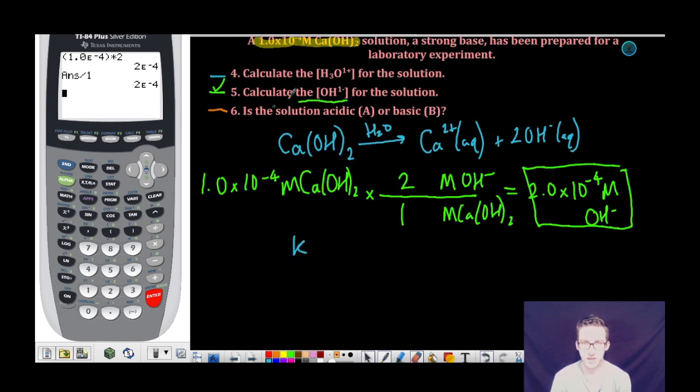Now, as I work to solve for the hydronium ion concentration, I'm going to come back to the relationship that exists between the hydronium ion concentration and hydroxide ion concentrations as related by the Kw equation, which is equal to the hydronium ion concentration times the hydroxide ion concentration. Again, at 25 degrees Celsius, Kw is a constant, which is 1.0 times 10 to the negative 14. The hydronium ion concentration is what we're trying to solve for here. The hydroxide ion concentration we determine to be 2.0 times 10 to the negative 4.